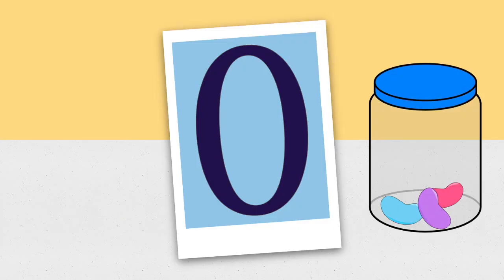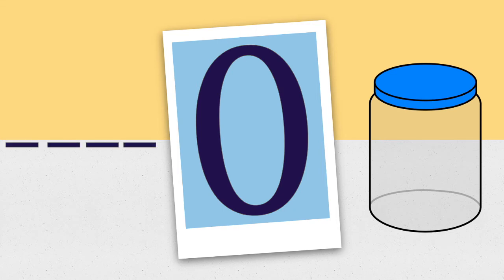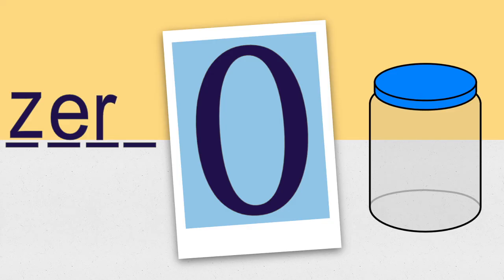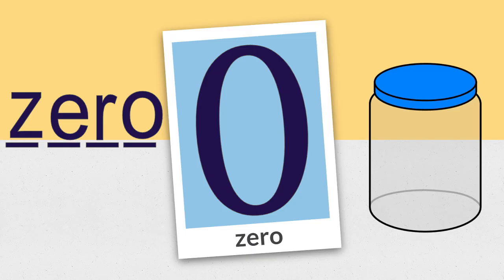Let's look at the number zero first. There's not zero jelly beans in that jar — we're gonna have to take some away. There. Now there are zero. I'm gonna say the sounds and I want you to say the letter. Z — zed or zee — e, r, o. Z, e, r, o spells zero. This word has two vowels and they both say their name. The O is an open syllable in the second syllable of ze-ro, so it says its name.